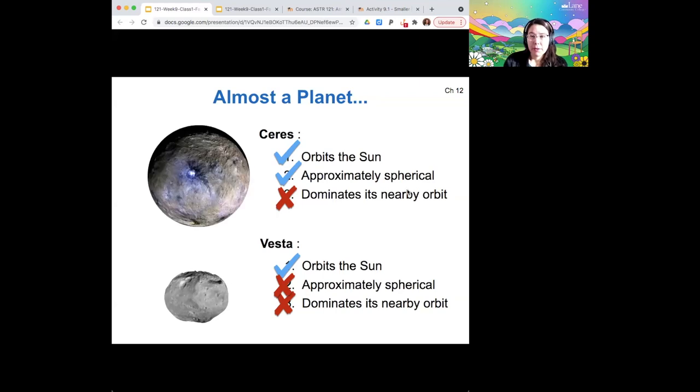Okay, so there are a few things that are almost planets, but they don't quite make the cut. Ceres is one example. Ceres orbits the sun, so it could be a planet based on that. It is definitely approximately spherical, but it doesn't dominate its nearby orbit because it's in the asteroid belt. So it hasn't glommed up all the other stuff and become a planet.